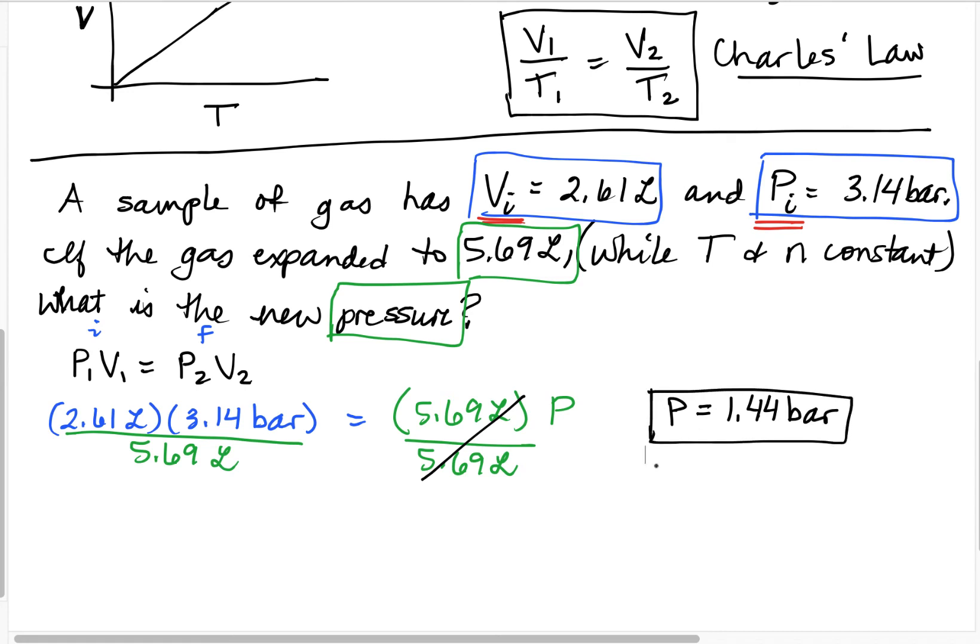Let's take a second and look at those numbers and see what should have happened. So let's review. We had a volume and we had a pressure. Then we increased the volume. So we gave the gas more space to be in. And if we give the gas more space, then we expect that the pressure should decrease because these two properties are inversely proportional. So let's check. Did they? Yes. The pressure went from 3.14 bar down to 1.44 bar. So we did see the decrease in the pressure that we were expecting. Let's try another practice problem.